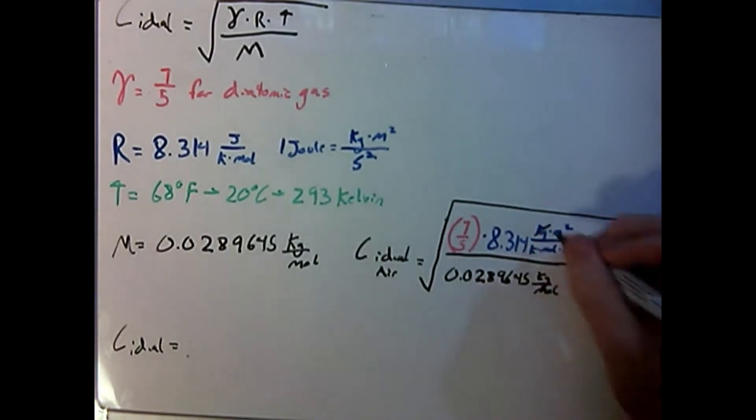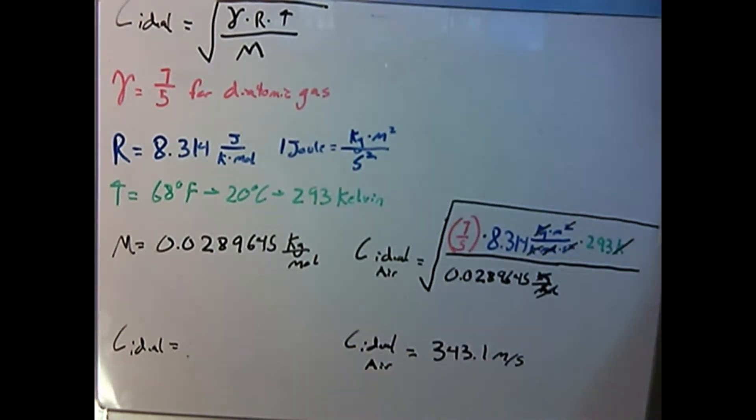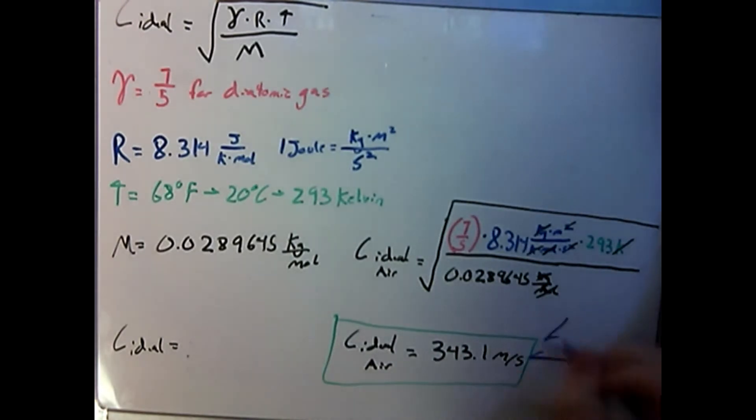Since we changed our joules to kilograms per meter squared per second squared, all of our units will cancel out, leaving us in meters per second. This gives us a speed of sound in air to be 343.1 meters per second.